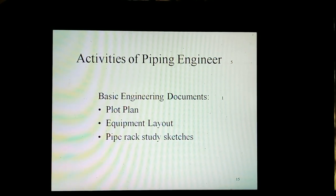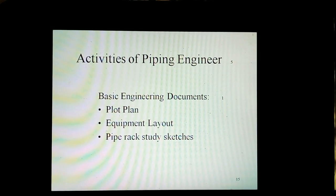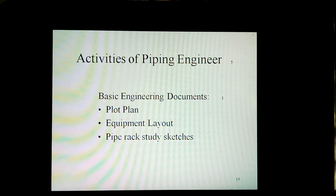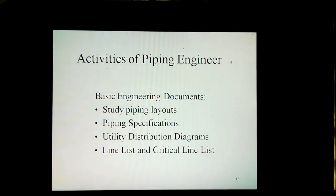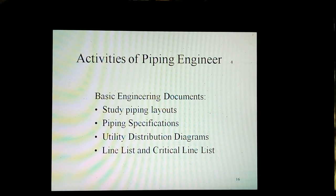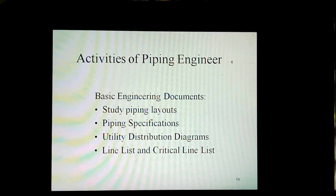Basic engineering documents include plot plan, equipment layouts, and pipe rack study sketches. They also include study piping layouts, piping specifications, utility flow diagrams, line list, and critical line list.